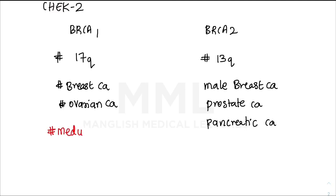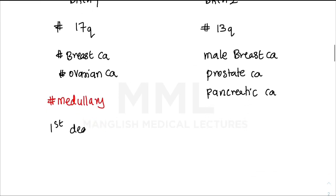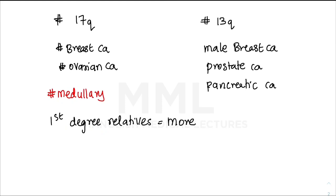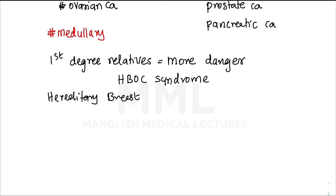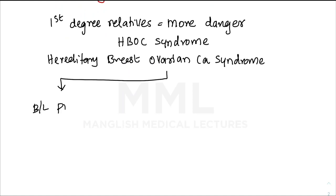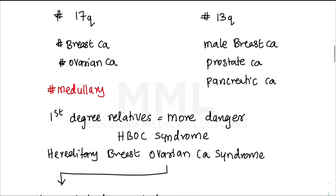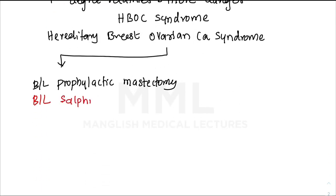BRCA1 mutation breast cancers are usually of the medullary type — I'll explain this later. First-degree relatives with BRCA mutations are very high-risk patients for HBOC syndrome — Hereditary Breast Ovarian Cancer syndrome. Prophylactic measures include bilateral prophylactic mastectomy to avoid breast cancer, but the risk of ovarian cancer still exists. Therefore, bilateral salpingo-oophorectomy is also performed.